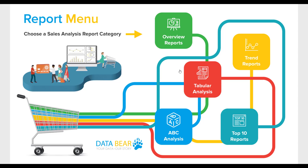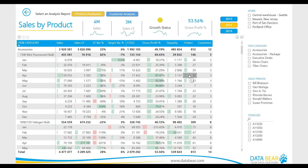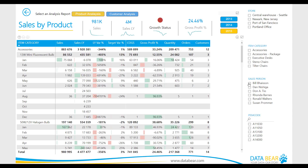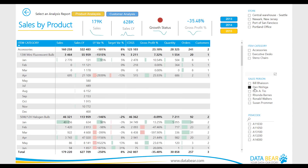When it's time for analyzing the details of various sales metrics from a variety of perspectives and angles, simply select the Tabular Analysis category from the menu. Our Product Analysis Report offers features which allow for selecting a desired year and then using the various slicers provided for isolating specific details for interrogation across months.